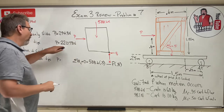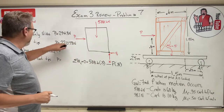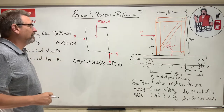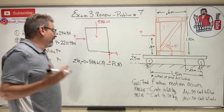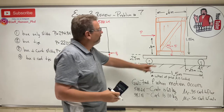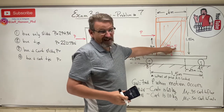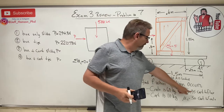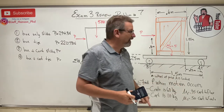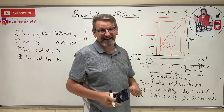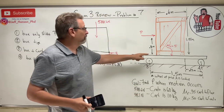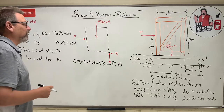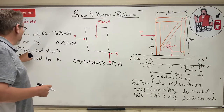So scenario two gives P = 220.73 N — that one's now winning. Note that mu_s between box and cart is 0.5, which is quite grippy, but the floor coefficient is only 0.35, which is relatively slippy. Let's move to scenario three: box plus cart slide.